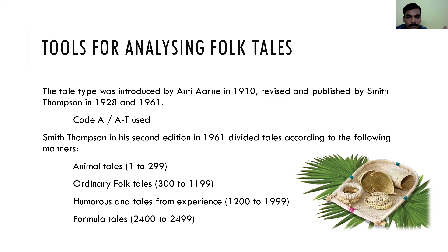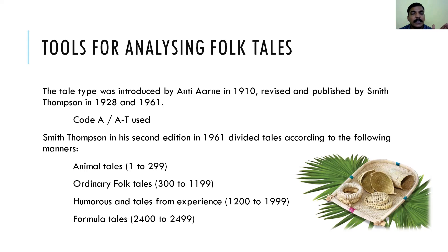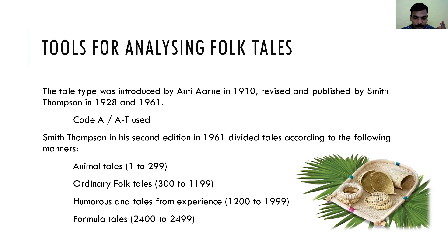Thompson made sub-themes with assigned numbers. For example, animal tales are numbered 1 to 299; ordinary folk tales are numbered 300 to 1199; humorous tales and tales from experience are numbered 1200 to 1999; and formula tales are numbered 2400 onwards. So the classification runs in that way.